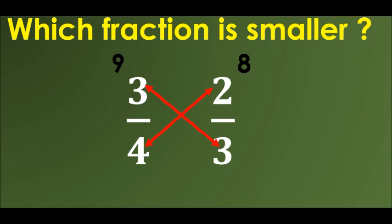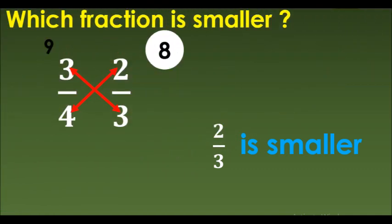We get 3 times 3 is 9 and 4 times 2 is 8. Since 8 is the smaller number, our answer for this question will be 2 upon 3. 2 upon 3 is the smaller fraction.